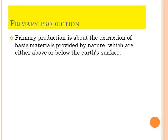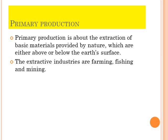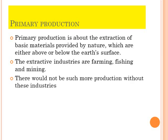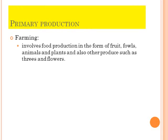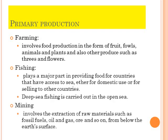Primary production is about the extraction of basic materials provided by nature, either below or above the earth's surface. The extractive industries include farming, fishing and mining. Farming involves food production in the form of fruit, animals, plants and other produce such as trees and flowers. Fishing plays a major part in providing food for countries with access to the sea, including deep sea fishing. Mining involves the extraction of raw materials such as fossil fuels, oil and gas from below the earth's surface.